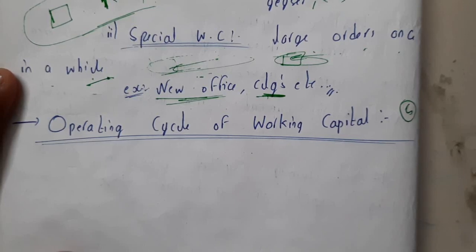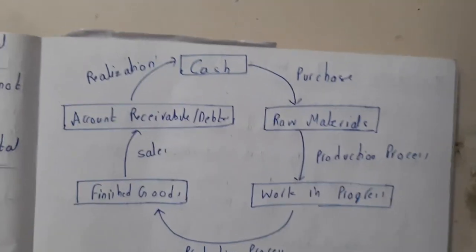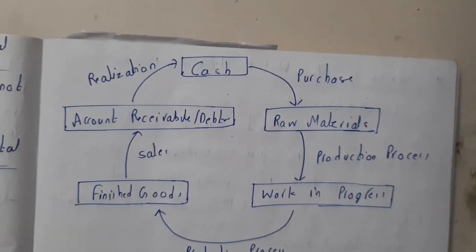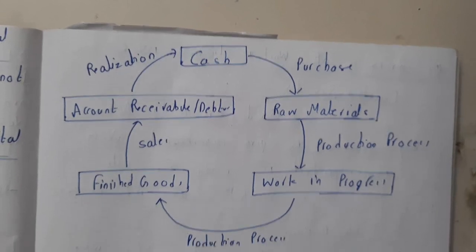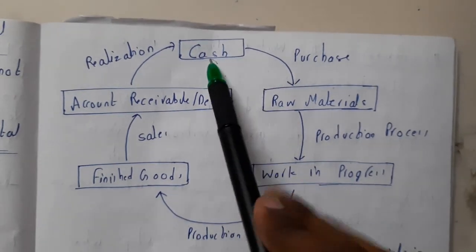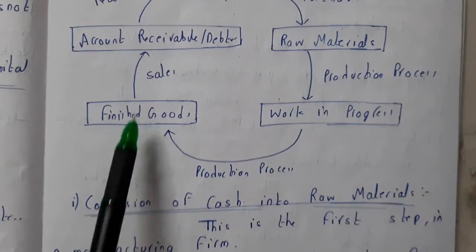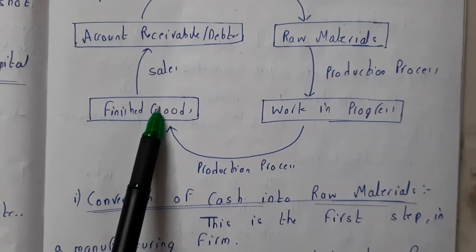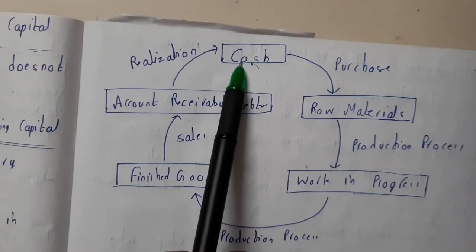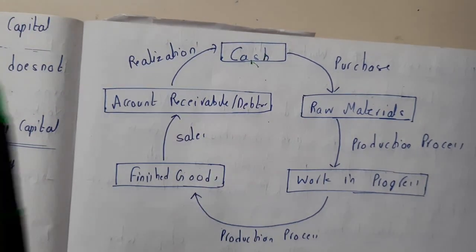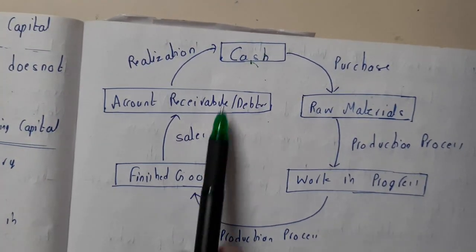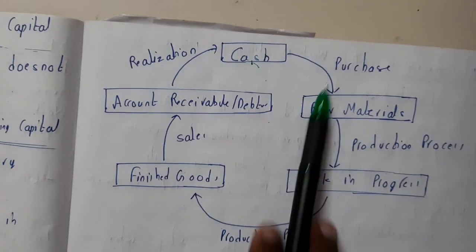Hello guys, we are back with our next lecture. In this lecture, let us go through the operating cycle of working capital. In our previous lecture we went through working capital and its types. The operating cycle is how you convert your cash into goods, your goods into finished goods, sell them, and return cash — with some profit — and this cycle continues.